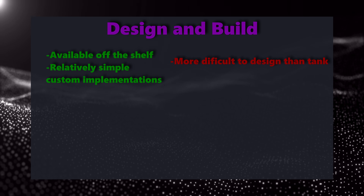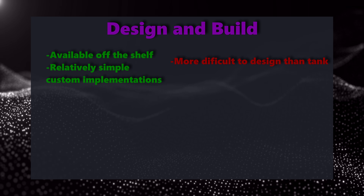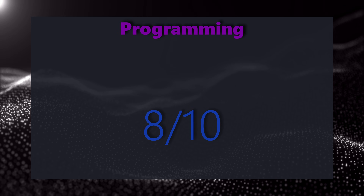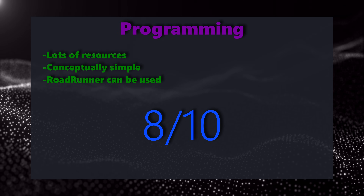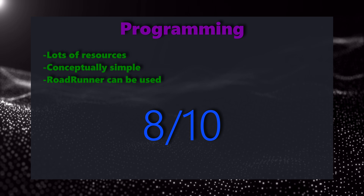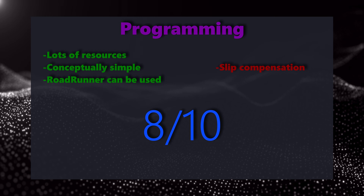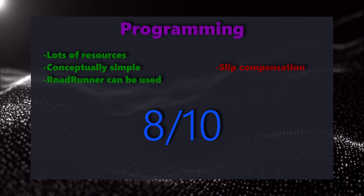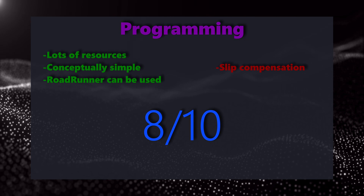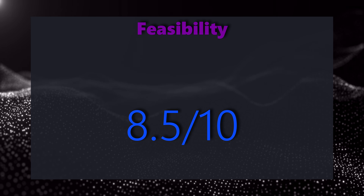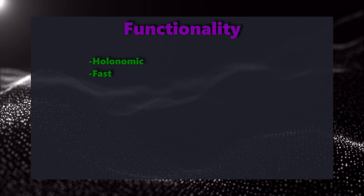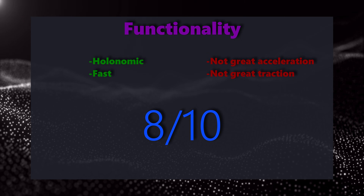Because of their availability off the shelf as well as the possibility of designing custom implementations, Mecanum gets a 9 out of 10 for build and design. For programming, I give it 8 out of 10 because of the resources available and conceptual simplicity. However, Mecanum slip comes into play here, requiring compensation in software for imperfect strafing, and it will also affect accuracy in autonomous assuming something like Roadrunner isn't being used. Feasibility: Mecanum gets an 8.5 out of 10. Functionality: because of the holonomic capabilities, Mecanum gets an 8 out of 10, losing points for acceleration and traction.